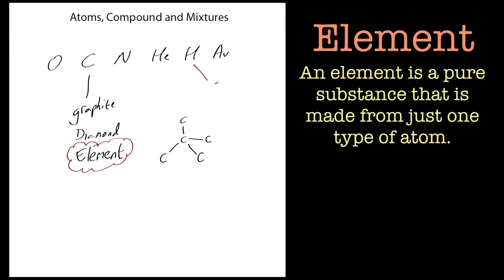Now, the atom itself — if we look at the hydrogen atom, a hydrogen atom is made up of a proton, and surrounding that proton is an electron. So that is the hydrogen atom: a proton and an electron. That's an atom.